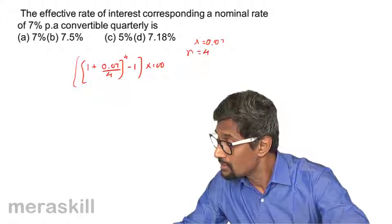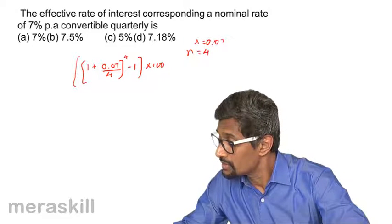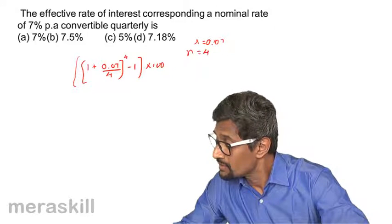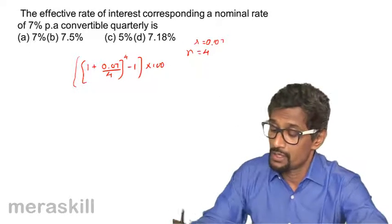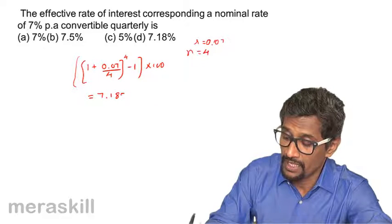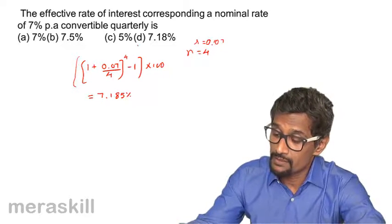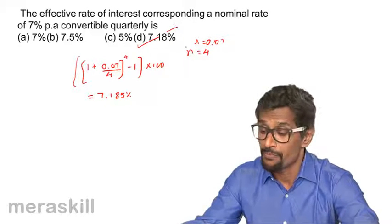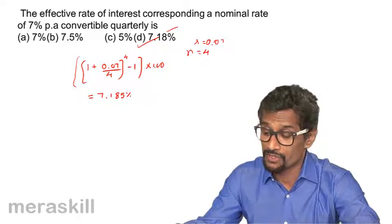So it turns out to be 7.185%, that is 7.19%. So among these, this seems to be the closest, that is option number B, 7.18%. The same thing if you had converted to monthly, it would become much more than this. The annual rate of return would become more.